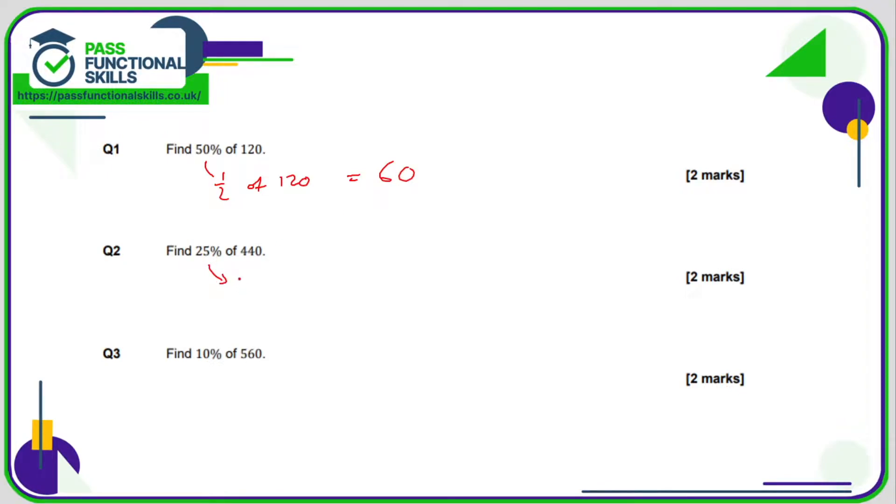Question 2 is easy if you know that 25% is a quarter. So what is a quarter of 440? That's 440 divided by 4. 4 divided by 4 is 1, 4 divided by 4 is 1, 0 divided by 4 is 0, so 110.